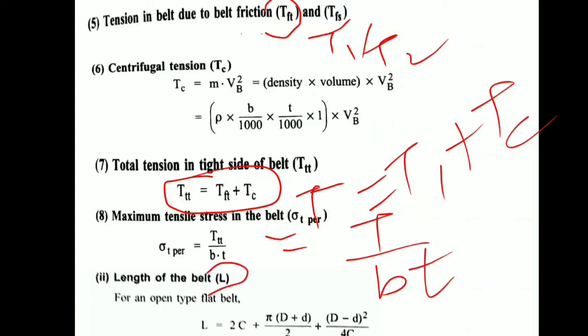And the last part of this, we need to calculate length of belt drive. For calculating that, we must know whether the belt is open drive or crossed belt drive. You must read it and then decide. If it is open, I'll write minus sign here: L equals 2C plus π(D plus d)/2 plus (D minus d)² divided by 4C.